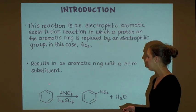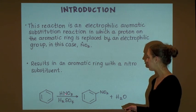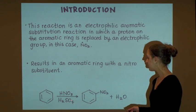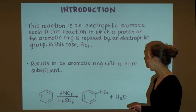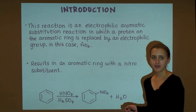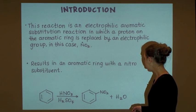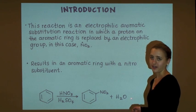In this example, benzene is treated with a mixture of nitric acid and sulfuric acid, and this results in an aromatic ring with a nitro substituent — in other words, nitrobenzene — and also the byproduct water.